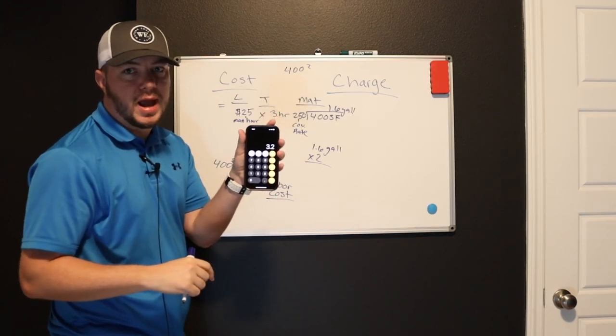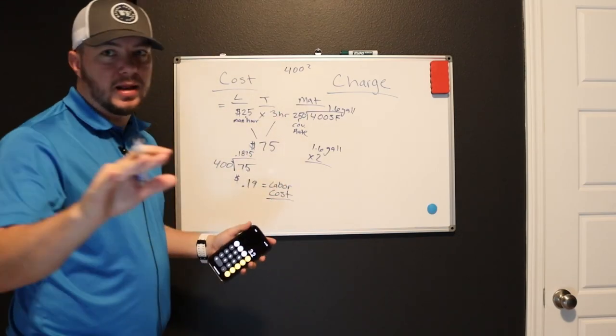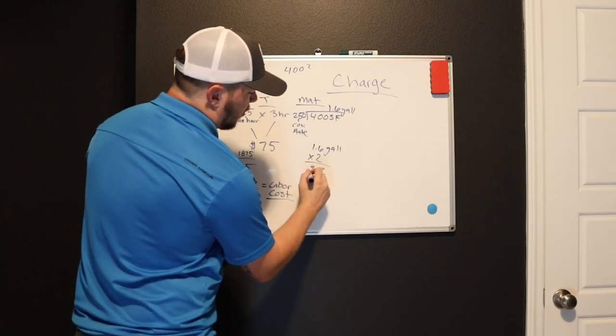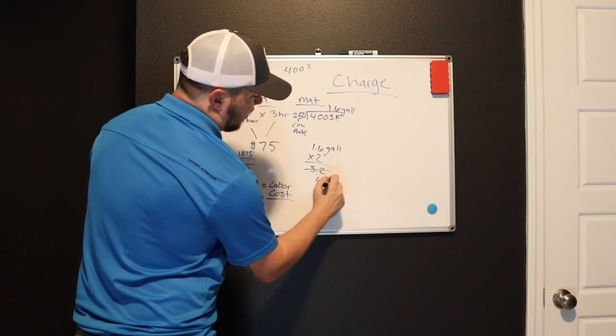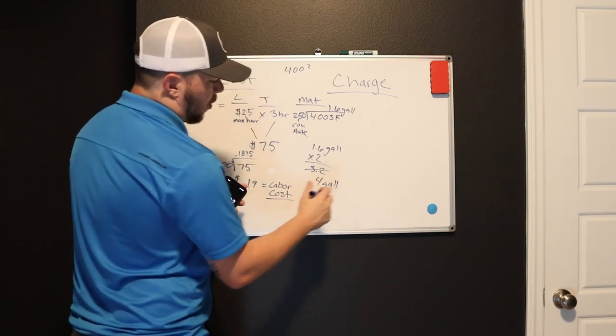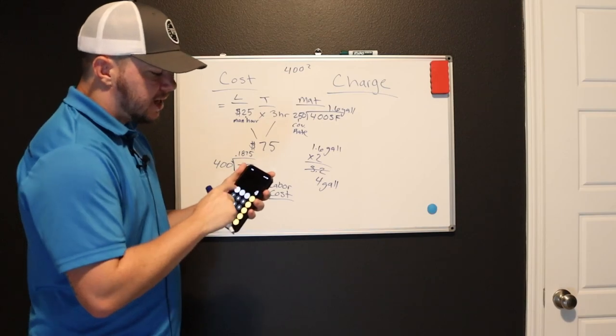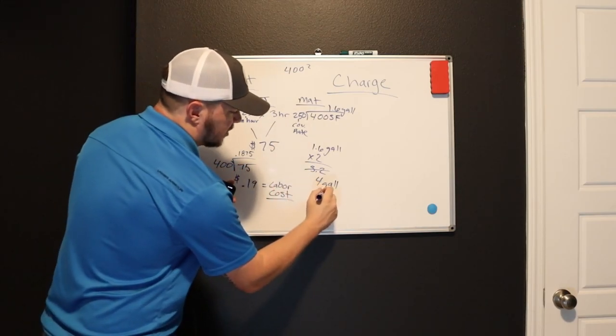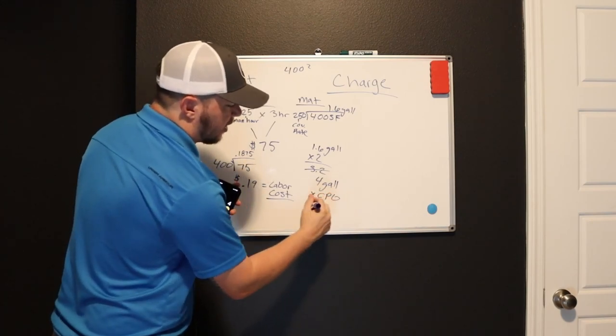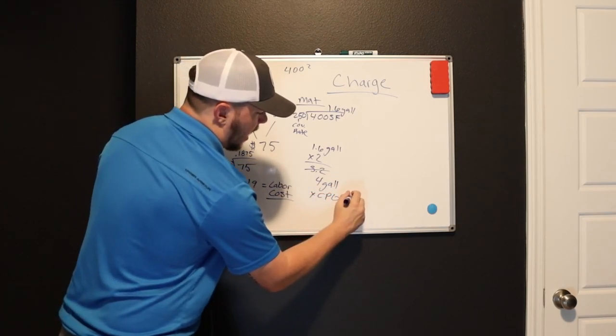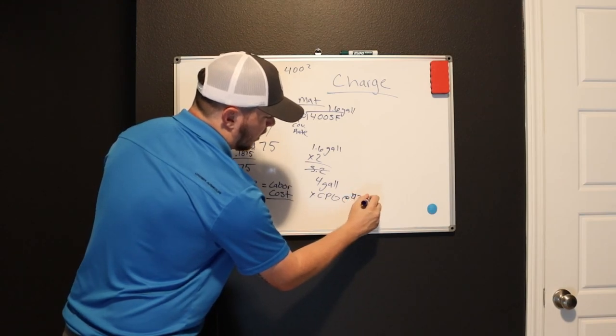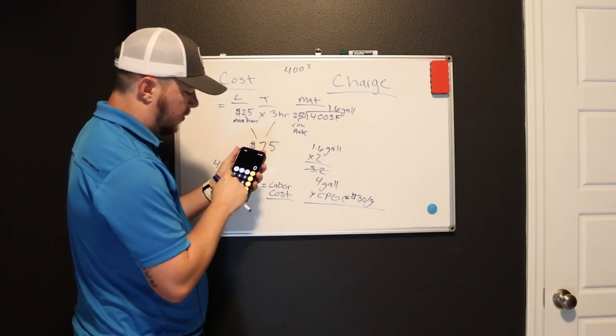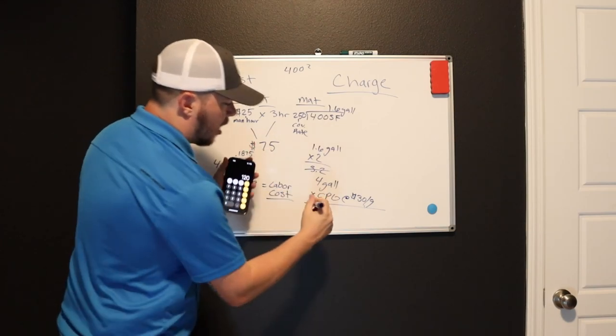So you want to take your 1.6 gallons times that by two. You got 3.2 gallons since you can't really buy 3.2 gallons. I'm not dealing with quarts over here. You want to round up. So 3.2, you want to round up to four. You're going to need four gallons to paint this room. So once you get your four gallons, let's say you get your four gallons at $30 a gallon. 4 times 30, $120.